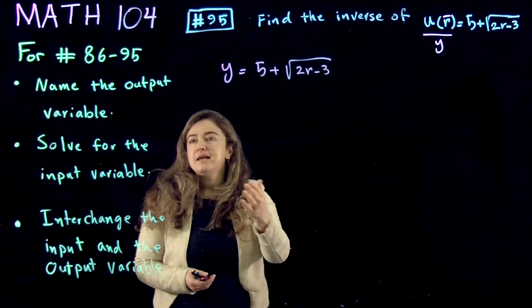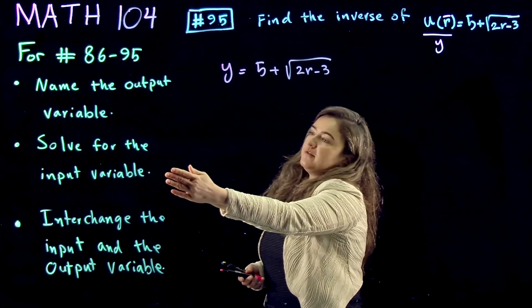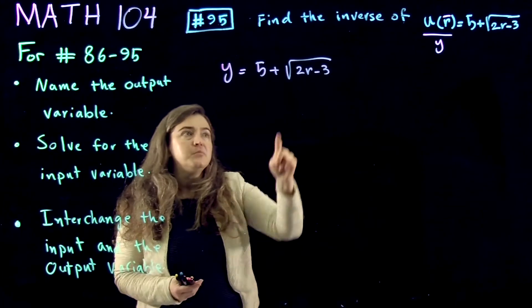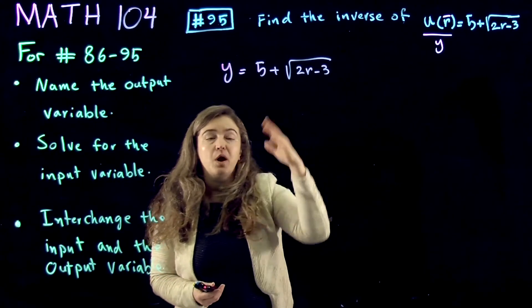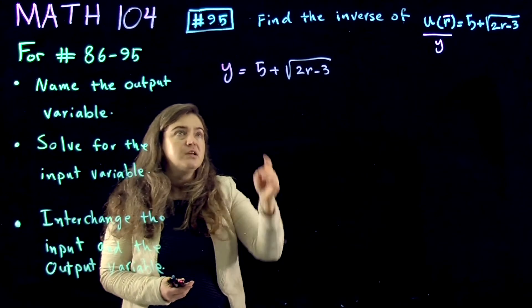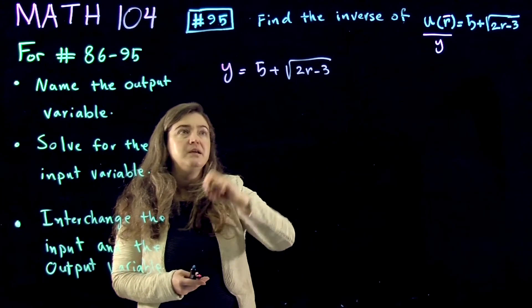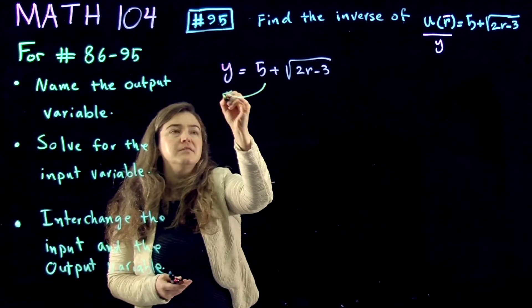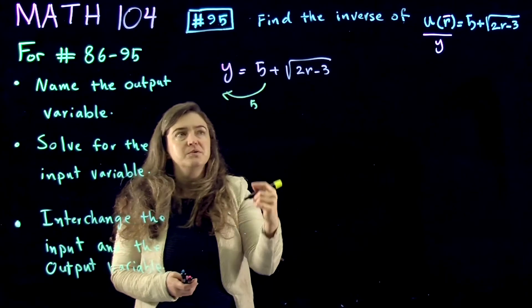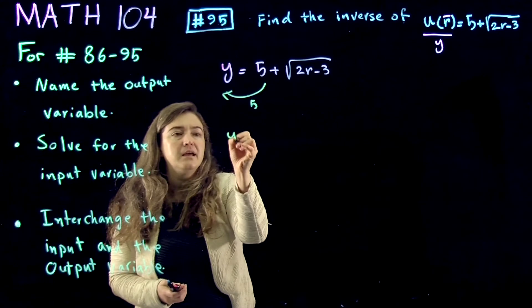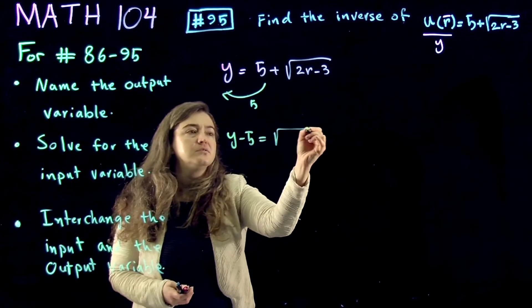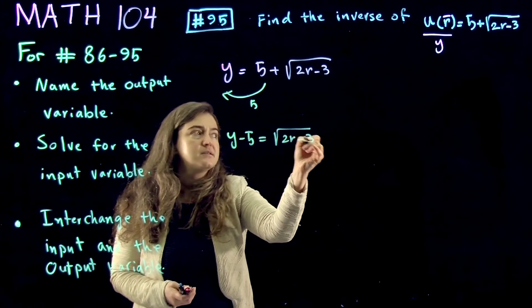Now the next step is to solve for the input variable. And input variable being r, I want to solve for r, so I want to isolate r first. To isolate r, the first step would be to subtract 5 from both sides, and I get y minus 5 is equal to square root of 2r minus 3.